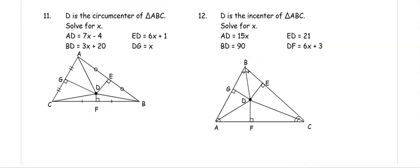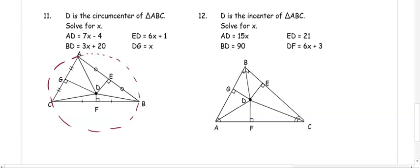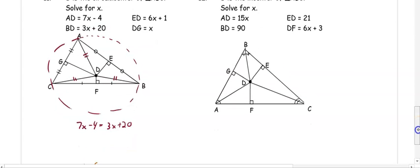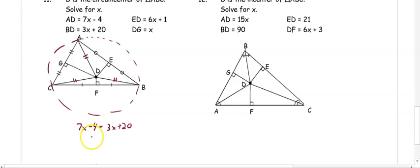D is the circumcenter, which means the circle goes around the triangle and that point is equidistant from the vertices. So AD, BD, and CD are congruent. Setting 7X minus 4 equal to 3X plus 20, we get 4X minus 4 equals 20, then 4X equals 24, so X equals 6.